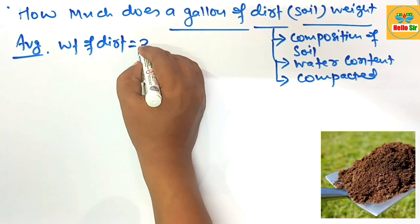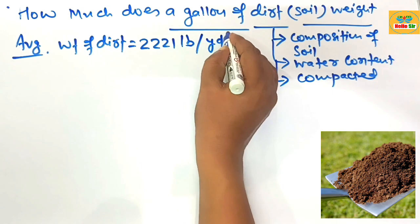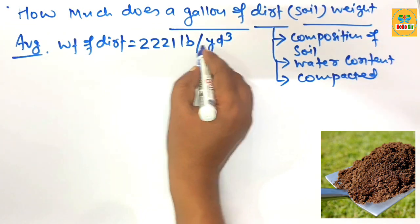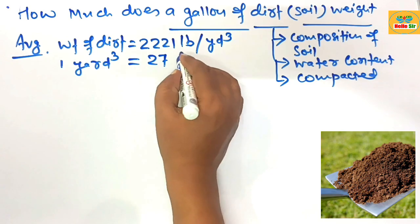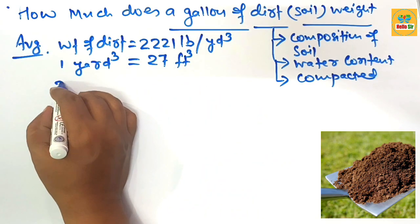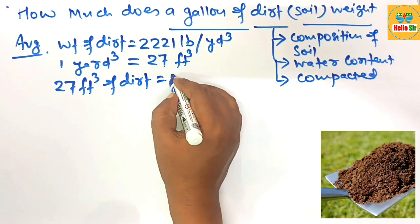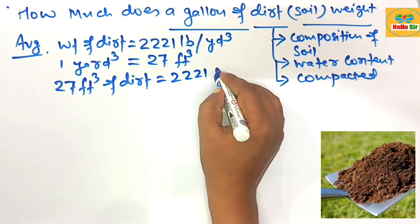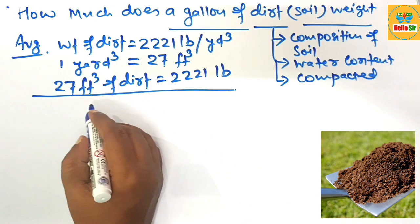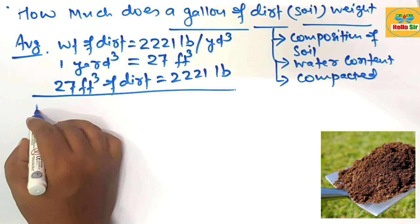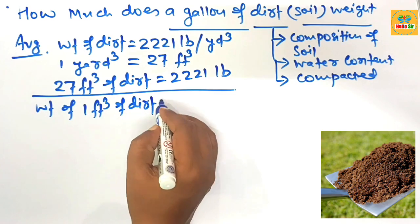On average, the weight of dirt is about 2,221 pounds per cubic yard. This is the average weight of dirt per yard. One cubic yard is equal to 27 cubic feet, so the weight of 27 cubic feet of dirt is about 2,221 pounds. Now to find the weight of one cubic foot of dirt, we divide this.